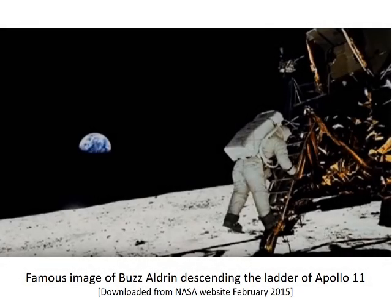I've noticed that a version of this picture has been doing the rounds lately on social media, and I thought I'd just do a quick video to address it. This is a famous picture of Buzz Aldrin descending the ladder of Apollo 11, and I downloaded this very picture from the NASA website in February 2015. There's a problem with this picture, so let's see what it is.